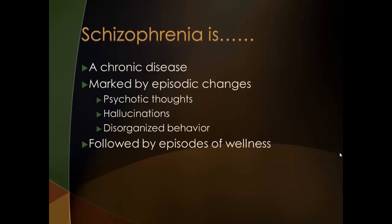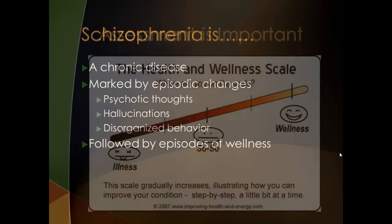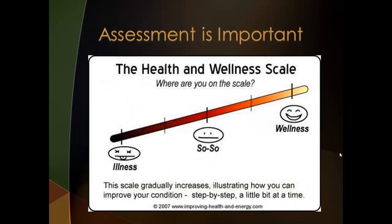Remember, the onset is slow. It's very easy for these clients to simply be characterized as odd or quirky, thereby delaying diagnosis and treatment. It is important to complete a thorough assessment, and this begins with a good history. Because this disease's progress waxes and wanes, it is important to find out where the client is at the moment so that baseline measures can be established.